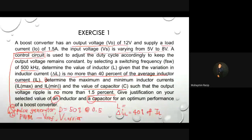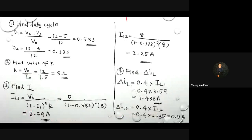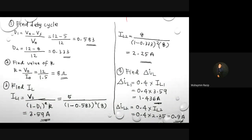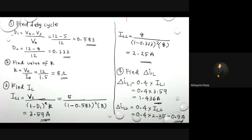So we go for the answer. First, find the duty cycle. In this example we have two input voltages — 5 volts and 8 volts — so we will have two duty cycles: D1 and D2. D1 corresponds to Vs = 8 volts and D2 corresponds to Vs = 5 volts. You will get two values of duty cycle.